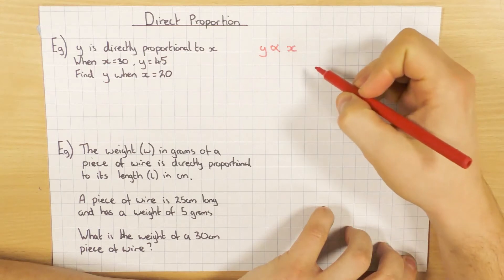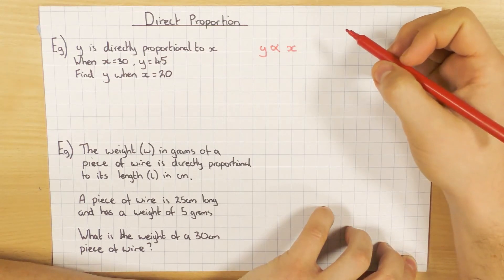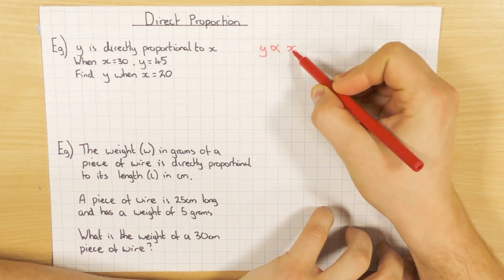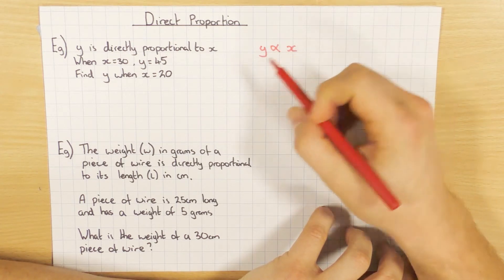Some students in my class like to call this the fish symbol, if that helps you remember it. So this is basically saying that y is directly proportional to x, and like I said, we need to find out what the relationship between the two is.